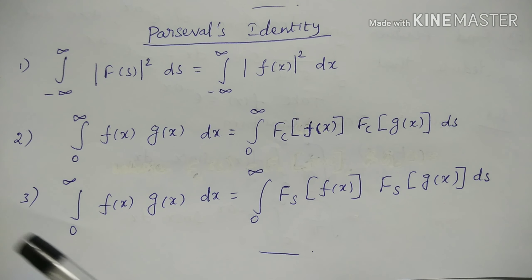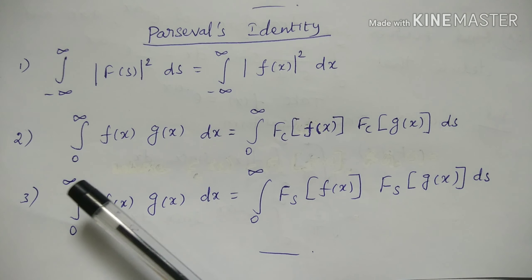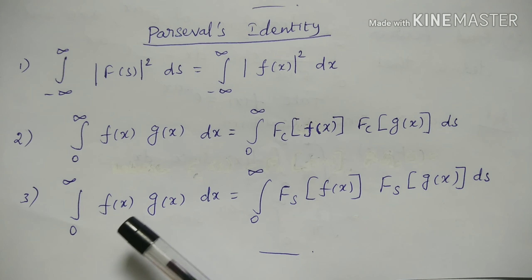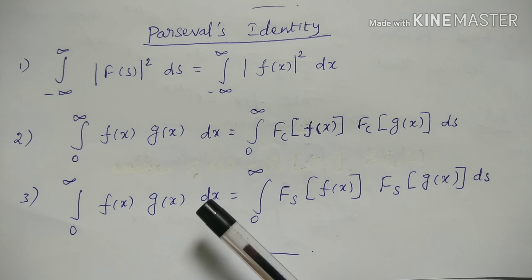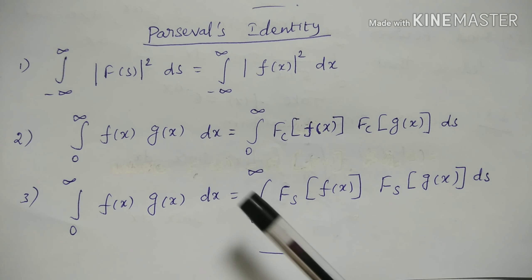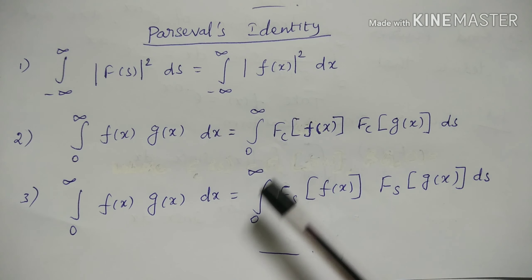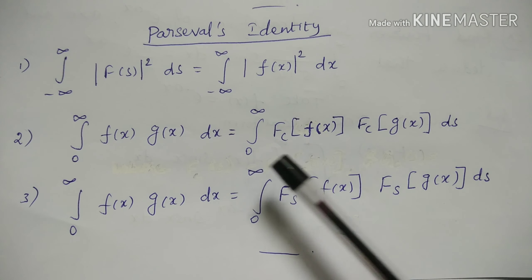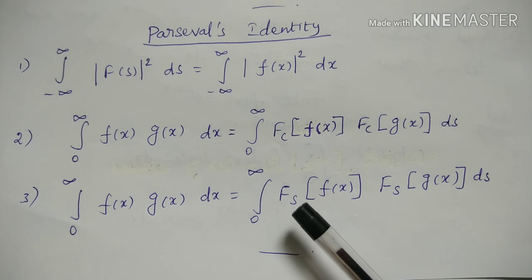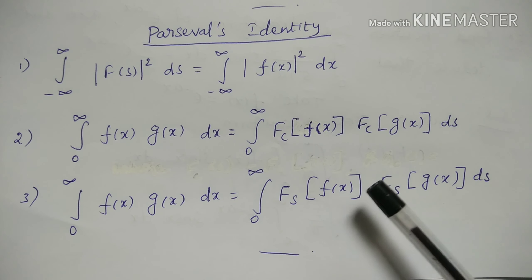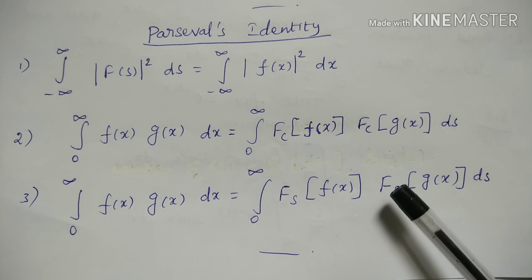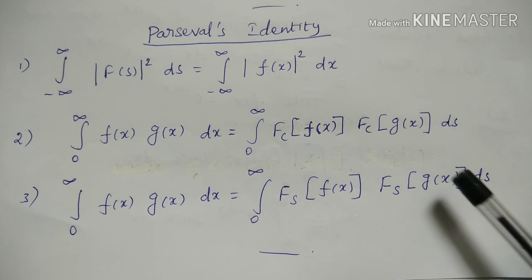Third formula: integral from 0 to infinity of f(x)·g(x) dx equals integral from 0 to infinity of Fs{f(x)}·Fs{g(x)} ds, where Fs denotes the Fourier sine transform.